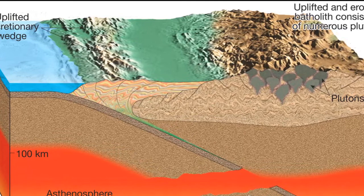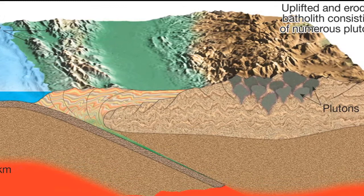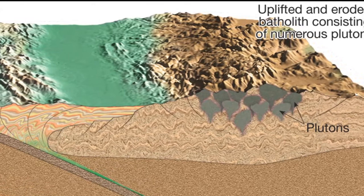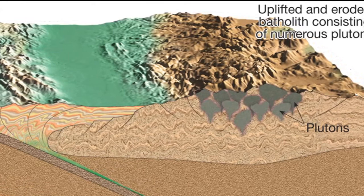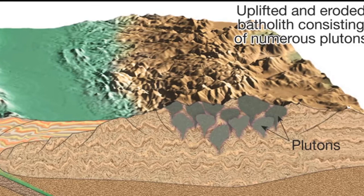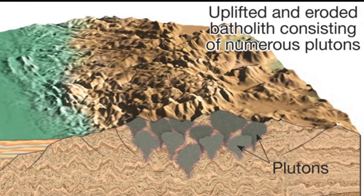Regarding the emplacement of plutons: thick continental crust greatly impedes the ascent of magma. A high percentage of the magma that intrudes the crust never reaches the surface. Instead, it crystallizes at depth to form plutons. The emplacement of these massive igneous bodies will metamorphose the host rock by the process called contact metamorphism. Eventually, uplifting and erosion exhume these igneous bodies and associated metamorphic rocks. Once exposed at the surface, these massive structures are called batholiths.